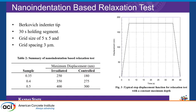For the relaxation test, we used a Hysitron Triboindenter fitted with the Berkovich indenter tip. Statistical nano indentation was performed using a grid size of 5 by 5 and a spacing of 3 micrometers. On the right side of the slide you can see a typical example of a step displacement function with loading and unloading segments of 5 seconds and a holding segment of 30 seconds at a predetermined critical depth. The maximum critical depth used for each cement sample for both irradiated and controlled samples is shown in the table.